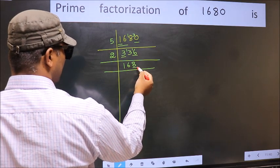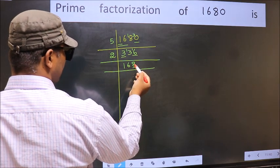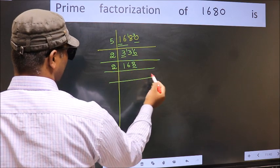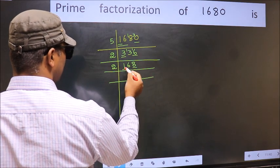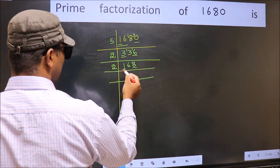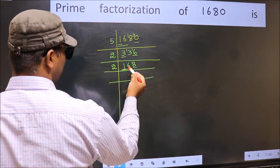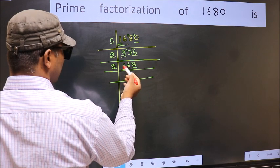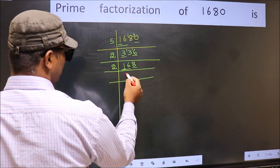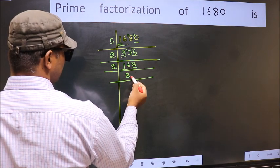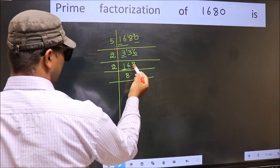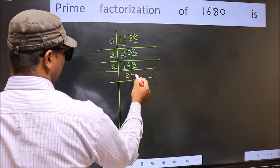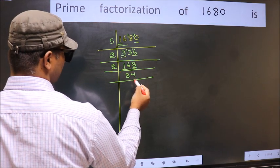Now the last digit is 8, even, so take 2. First number 1 is smaller than 2, so take 2 numbers: 16. When do we get 16 in the 2 table? 2×8=16. The other number is 8. When do we get 8 in the 2 table? 2×4=8.